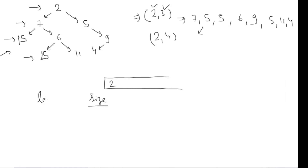I'll also take a variable called level, and at the start my level is one because I'm at the root. I'll remove elements from the queue. Before removing, I'll get the size — how many times I need to operate for this level. When size is one, I have only one element at this level. I'll operate until size is greater than zero. When I remove node 2, I check whether it's at a permissible level — currently level one, but permissible is two to three — so I won't print it.